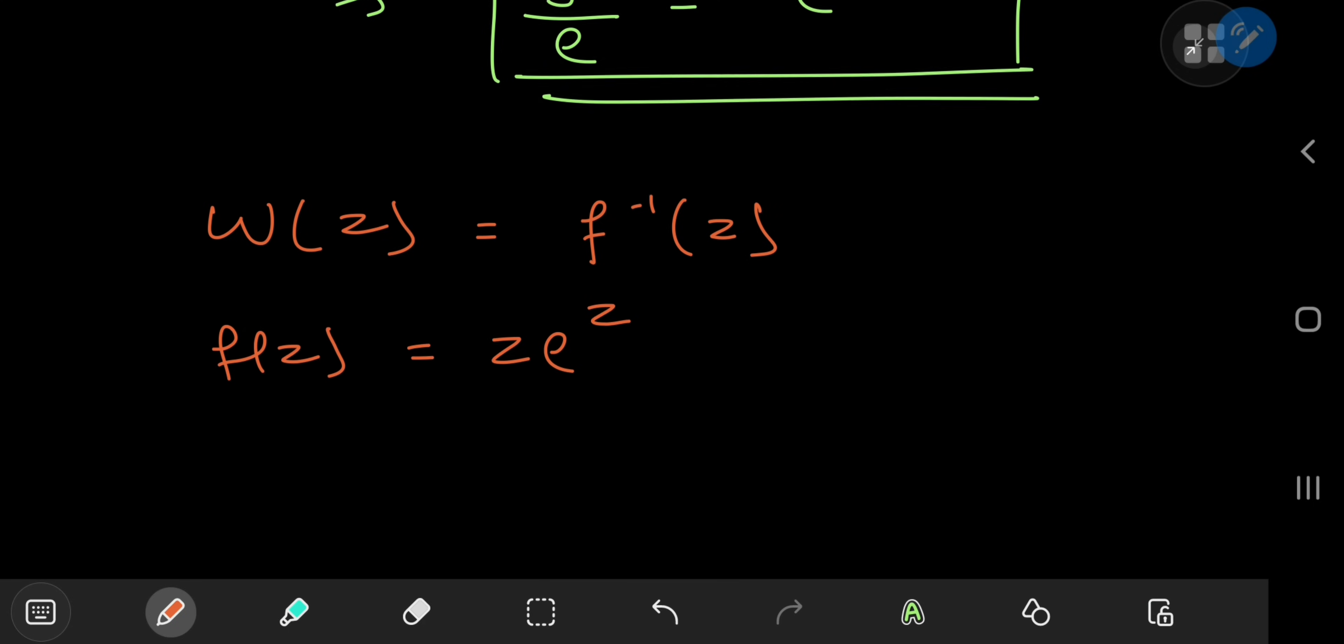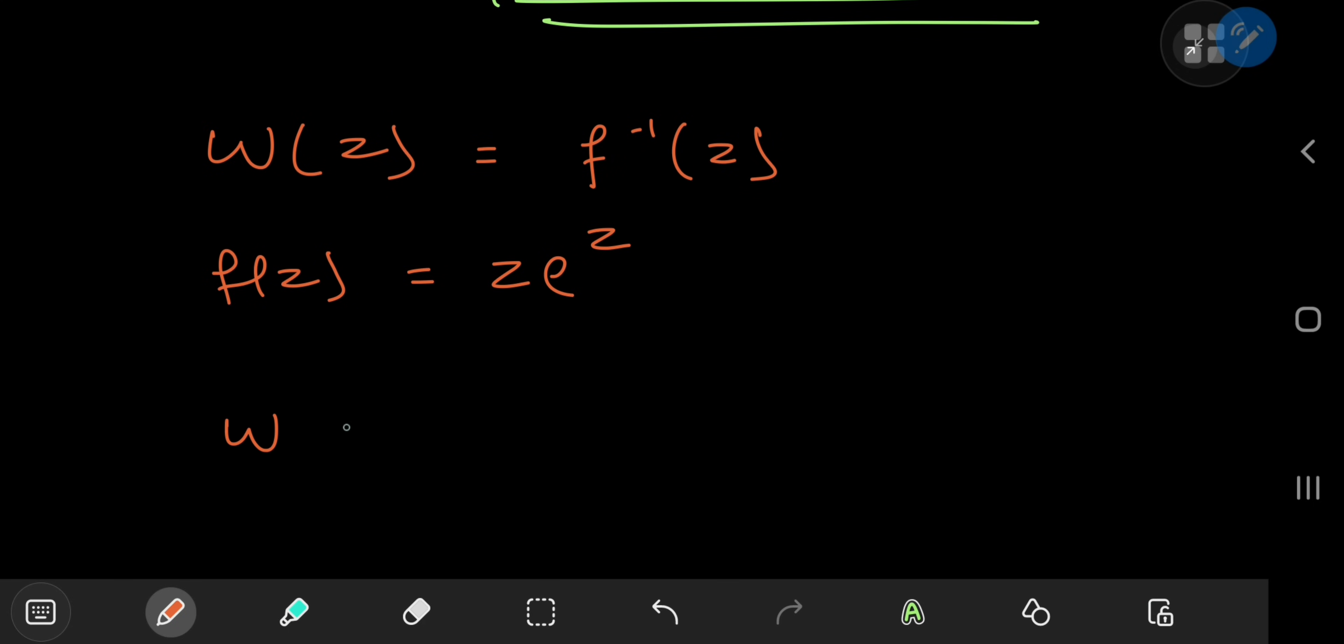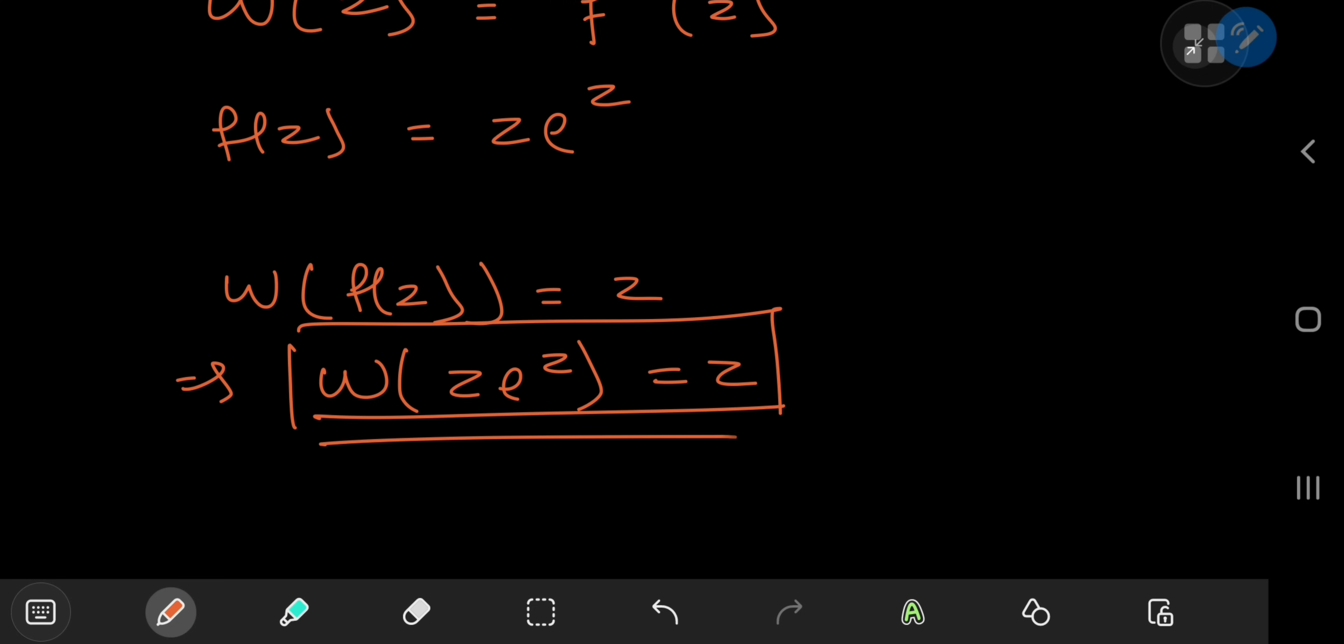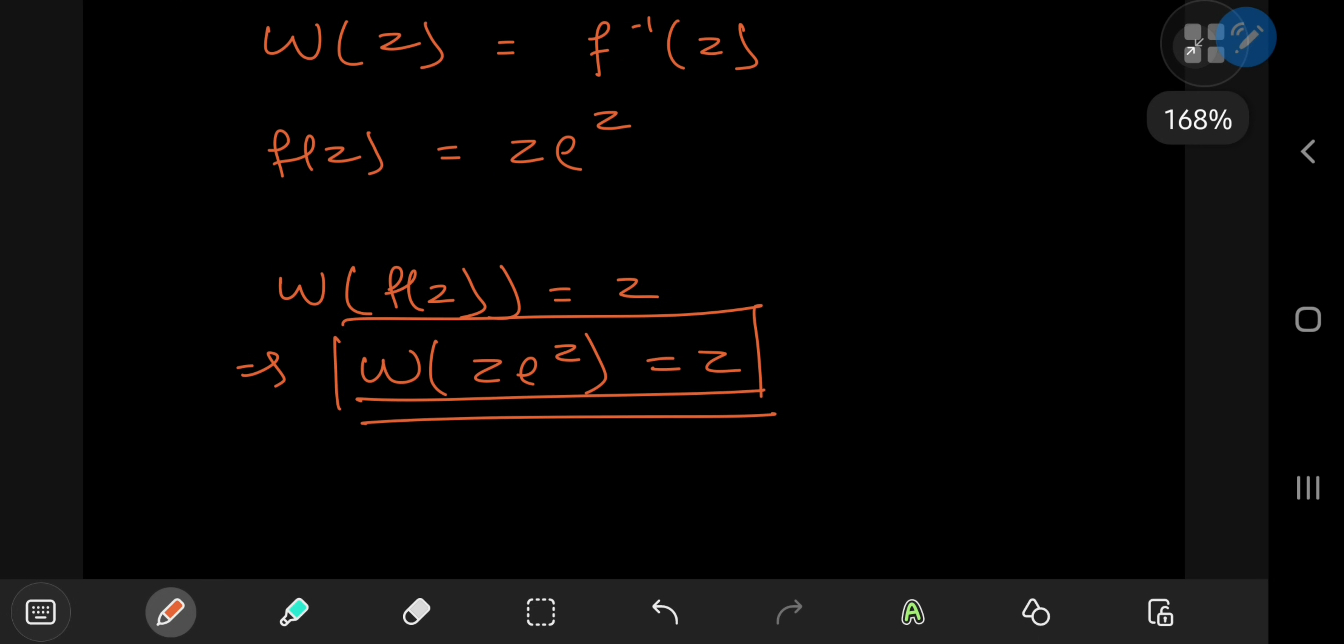So that means if you apply the Lambert W function to the function f(z), it returns the variable z. In other words Lambert W of z times e to the z equals z, and it's this property that we're going to utilize to get an explicit solution for y in terms of x.